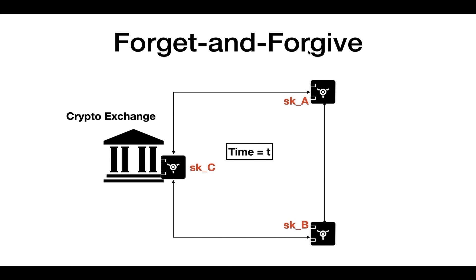The first attack works best in the cold setting and focuses on a protocol for key rotation, a common industry practice. If every safe holds a secret share SK, we want a protocol for all safes to change their secret key shares while maintaining access to the funds locked under the joint public key. This is a basic requirement because otherwise a single attacker could systematically compromise site by site until uncovering the full private key. We call this attack Forget and Forgive, since parties are forced to forget their old keys, potentially ending up with the distributed key lost.